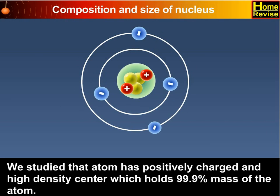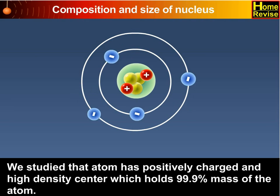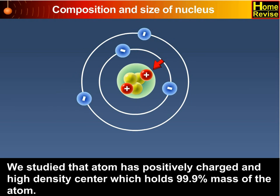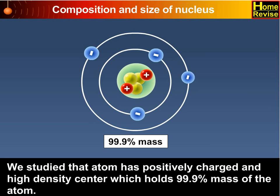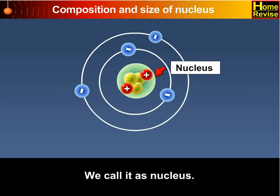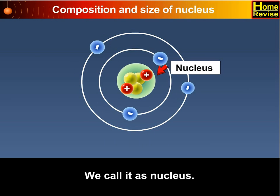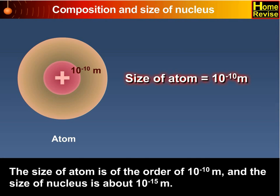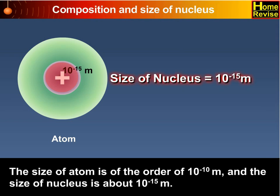Composition and Size of Nucleus. We studied that the atom has a positively charged and high density center which holds 99.9% of the mass of the atom. We call it the Nucleus. The size of the atom is of the order of 10 raise to minus 10 meters, and the size of the nucleus is about 10 raise to minus 15 meters.